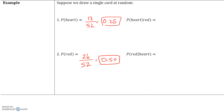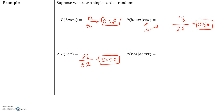Now let's do a conditional probability. What is the probability that we drew a heart given that we drew a red card? This condition has already occurred — we've already drawn a red card. There are 26 red cards, so our sample space goes from 52 cards down to 26. Out of those 26 red cards, there are 13 hearts, so 13 out of 26 gives us 0.50. Logically, half of the red cards are hearts and half are diamonds, so the probability is one-half.